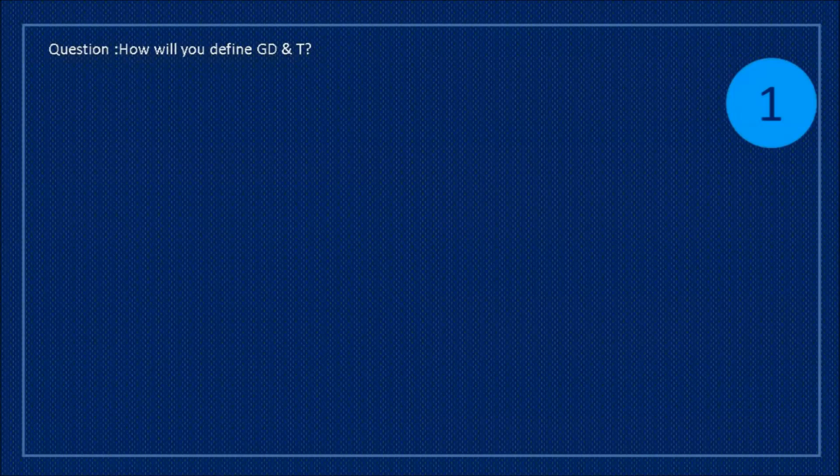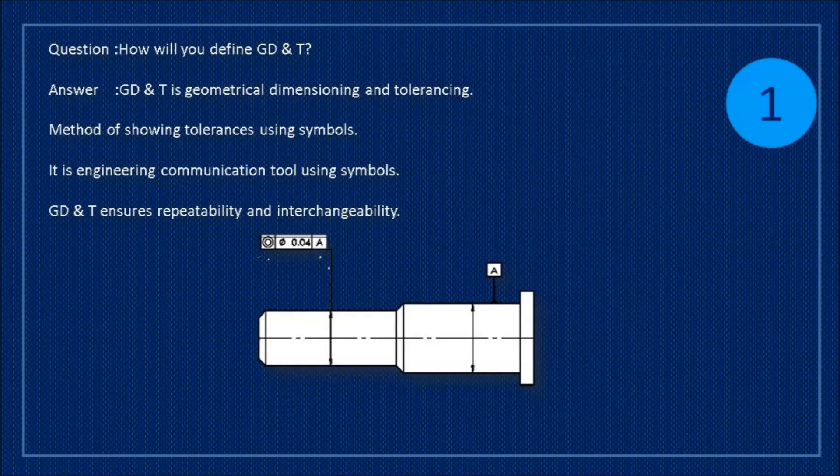How will you define GD&T? GD&T is geometrical dimensioning and tolerancing. Method of showing tolerances using symbols. It is engineering communication tool using symbols. GD&T ensures repeatability and interchangeability.